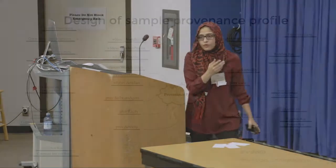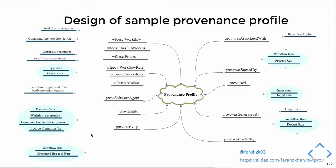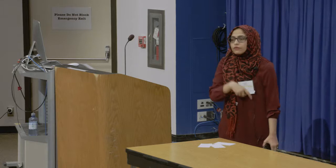We then designed a sample provenance profile. It looks scary, but it turns out to be useful. Every provenance profile uses these namespaces to refer to attributes common for every workflow: execution engine, workflow run, process run, and input data. These are not specific to CWL — you can adopt this provenance profile for different workflow systems. This provenance profile gives you information about who did it, when it happened, and what was used to achieve the process.